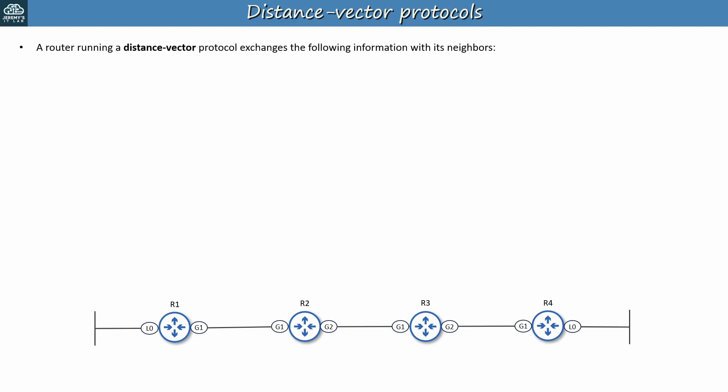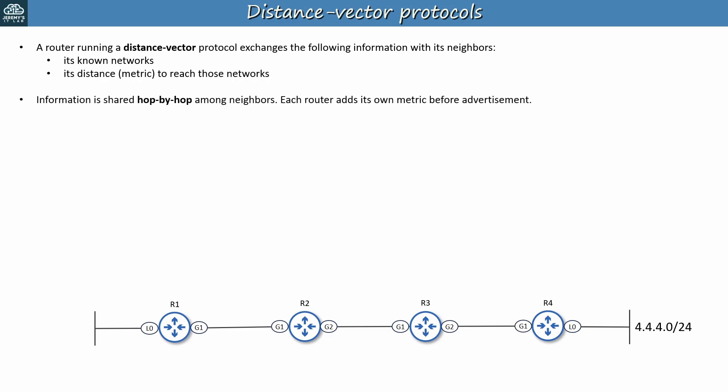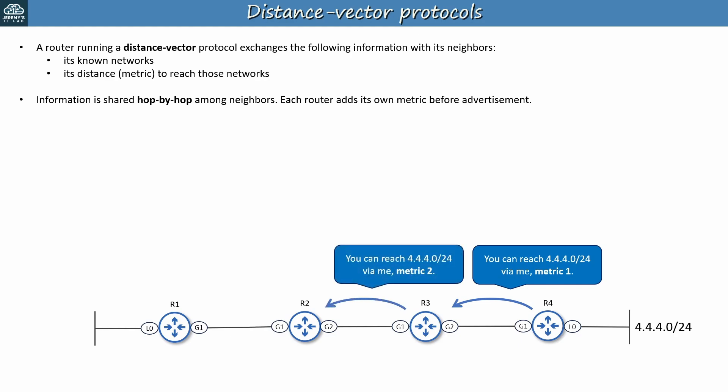A router running a distance vector protocol exchanges the following information with its neighbors: its known networks and its distance — in other words, its metric — to reach those networks. Distance is the metric value, and the vector is the direction, the next hop router — hence the name distance vector. In this example network, R4's L0 interface connects to the 4.4.4.0/24 network. Information is shared one router at a time, hop by hop between neighbors, and each router updates the distance by adding its own cost before advertisement. So R4 would tell R3: you can reach 4.4.4.0 via me with a metric of 1. R3 would pass that information along — you can reach it via me with a metric of 2, adding its own metric.